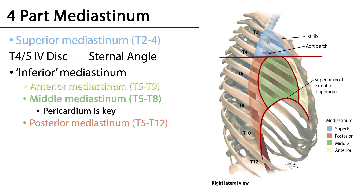The four-part or classical division of the mediastinum involves a break at the sternal angle. The sternal angle is where the manubrium of the sternum meets the body of the sternum. You can palpate this on yourself — feel the midline of your chest and you can feel a definite ridge. Imagine a plane going posteriorly to the intervertebral disc between T4 and T5. That sets the dividing plane.